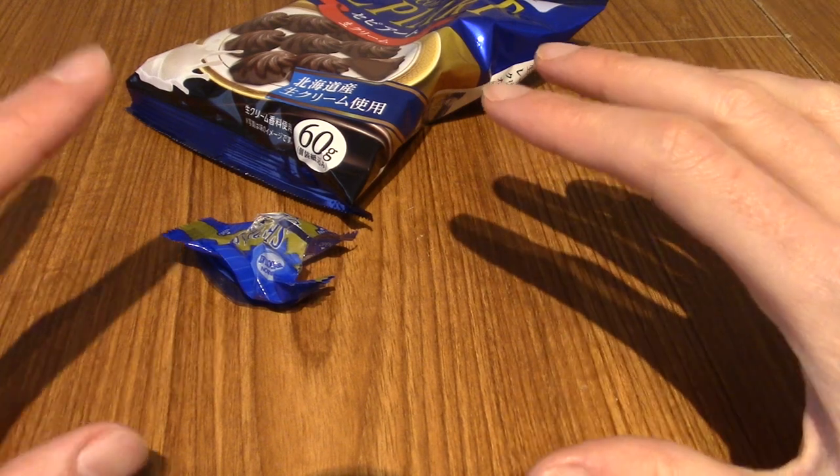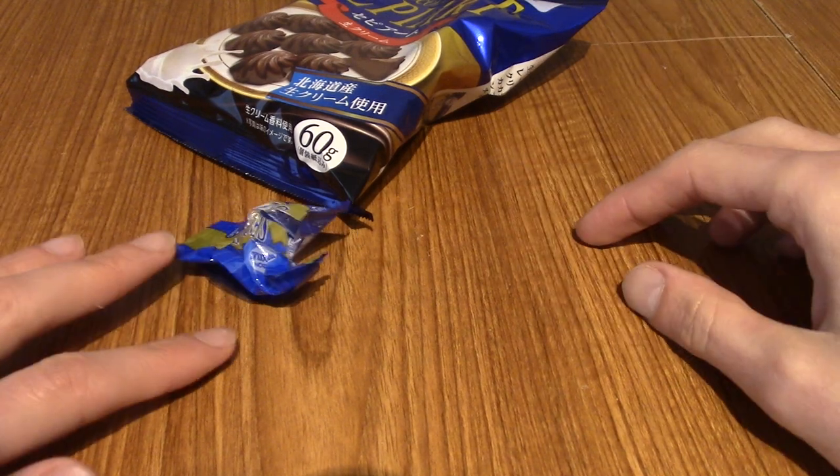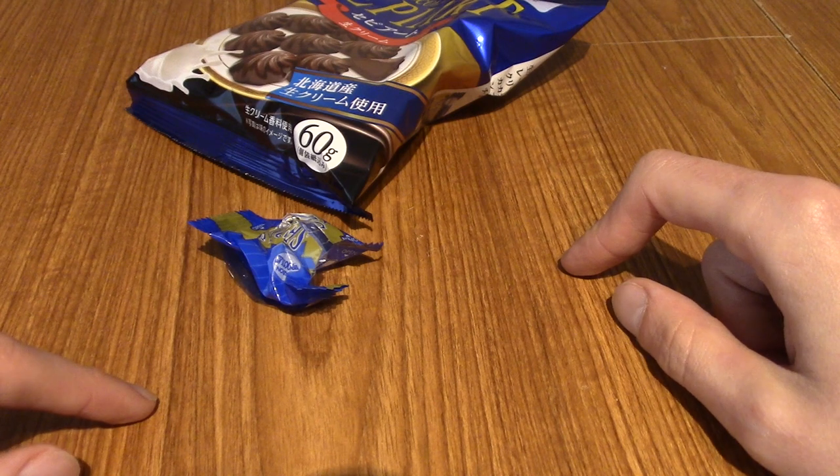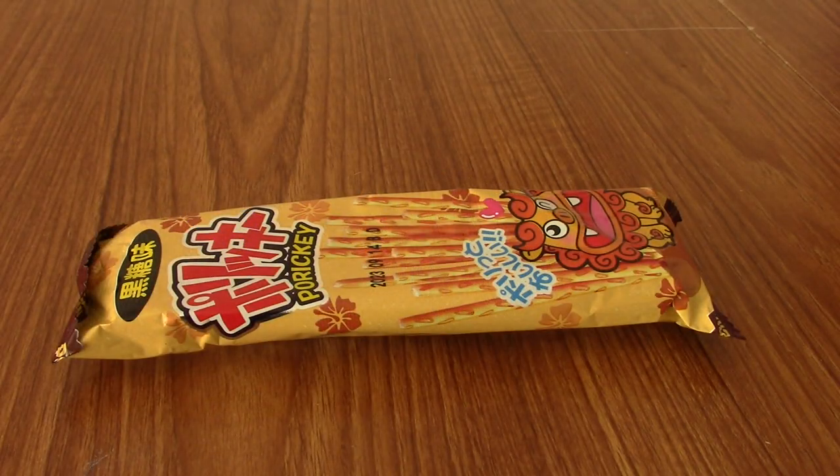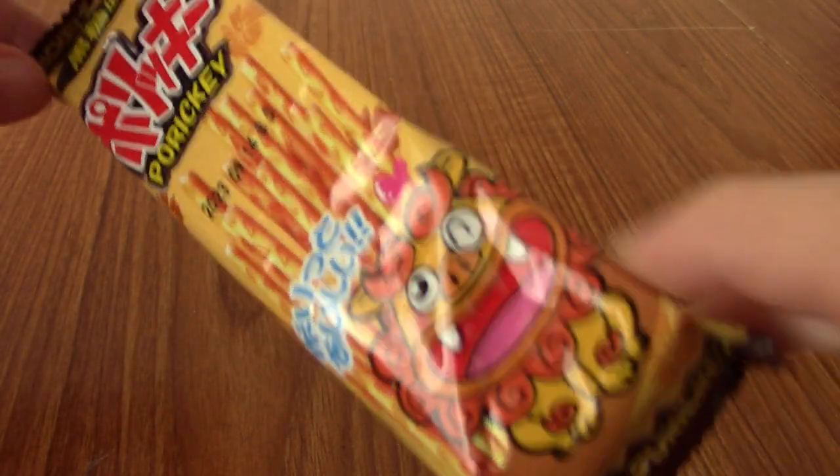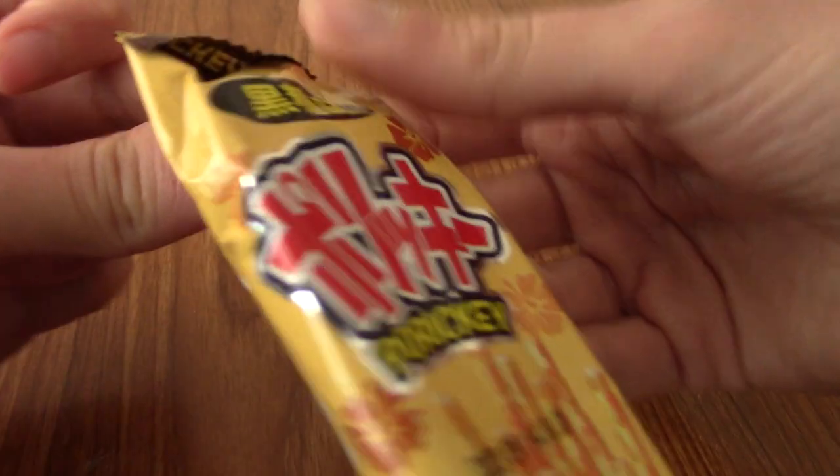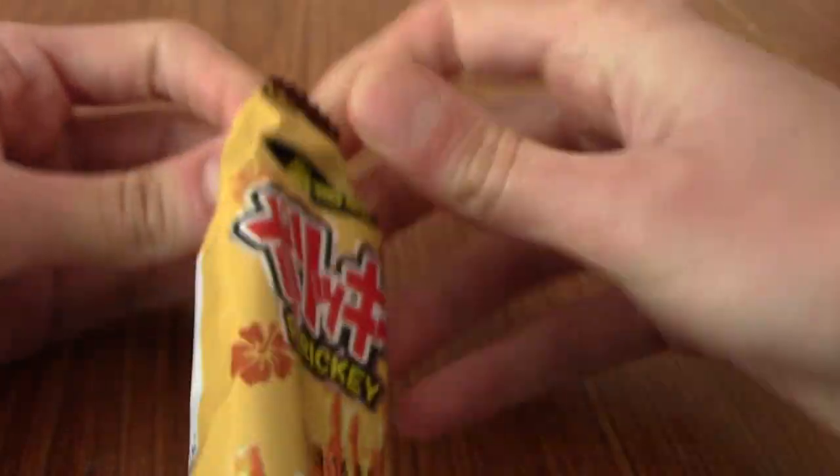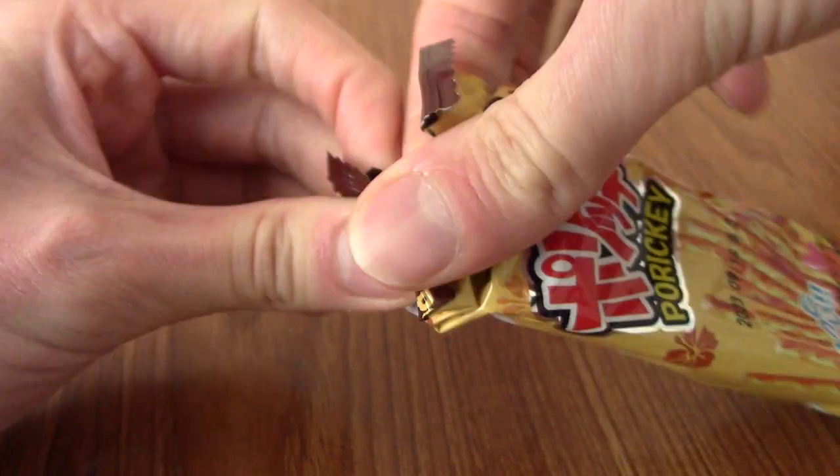It has a nice lingering taste as well of just kind of creamy milk, which is exactly what it says on the package, providing you can read Japanese. On to the next snack. It's time for something a little bit sweet, and that is Poruki brown sugar flavor. It's got that Japanese lion on the front. Let's crack it open. I believe last episode we did have a brown sugar stick, which is obviously a little bit different from this.